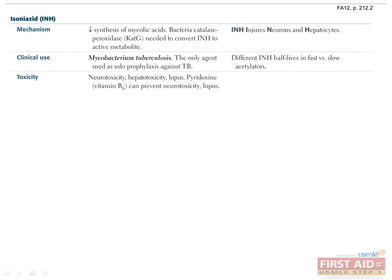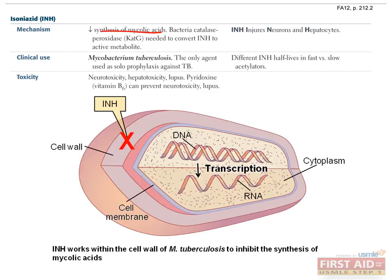INH works within the cell wall of M. tuberculosis to inhibit the synthesis of mycolic acids, which are part of the cell wall. It is actually the metabolite of INH that is active against M. tuberculosis; therefore, INH requires catalase-peroxidase for conversion to this active molecule. INH has a number of clinically important side effects including neurotoxicity, hepatotoxicity, and lupus, which can be prevented by co-administration of pyridoxine (vitamin B6). The mnemonic: INH injures neurons and hepatocytes.